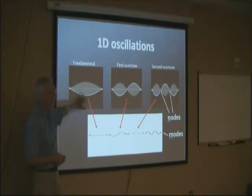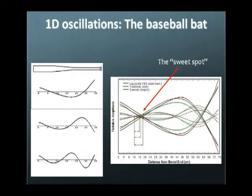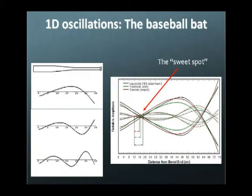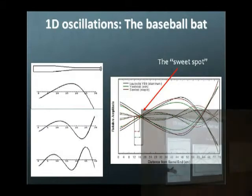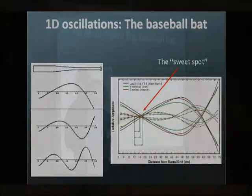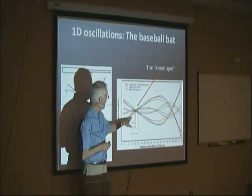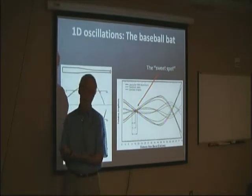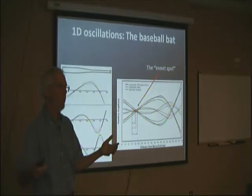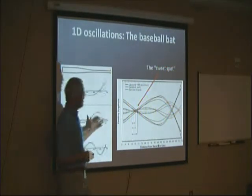Here's another example of a one-dimensional instrument. Most of you will have had the experience of hitting a baseball on the end of the bat incorrectly. The bat has got natural oscillation modes — when you put them all together, the nodes come together right there in the sweet spot, which is where you want to hit the ball. Hit the ball there and that's home run time. Hit it anywhere else and the bat goes into vibrations — it buzzes right out of your hands, your hands feel numb, and if the ball goes anywhere it just dribbles down to the pitcher.